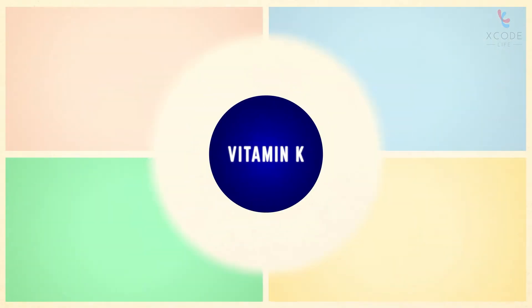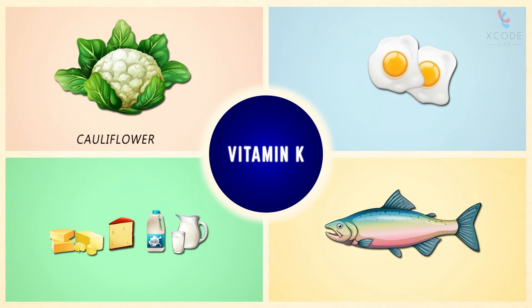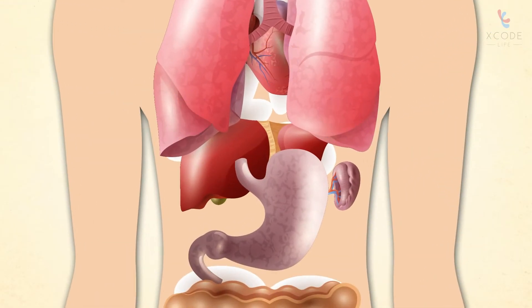Other dietary sources of vitamin K include cauliflower, egg yolk, dairy products, and tuna fish. Once vitamin K enters the body, bile salts are released from the liver for its absorption.